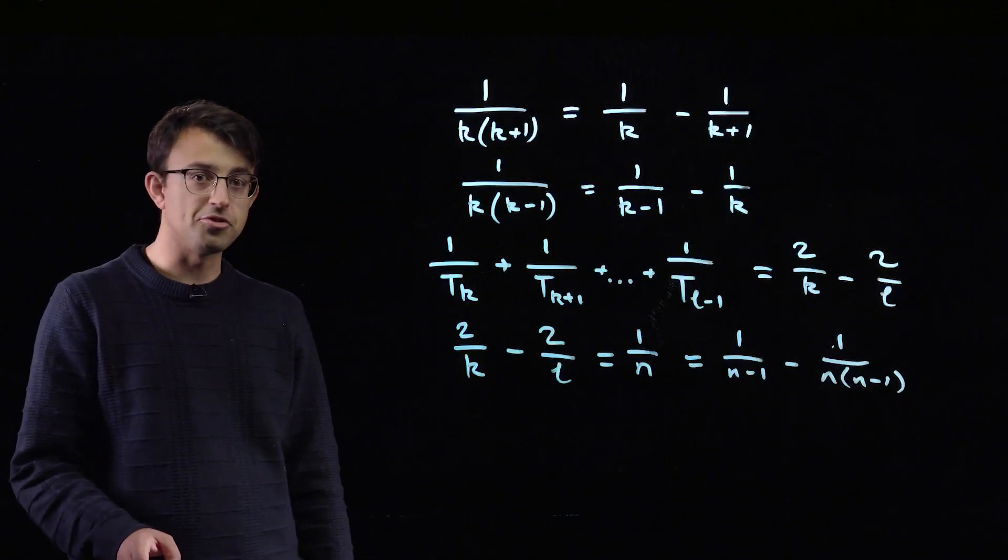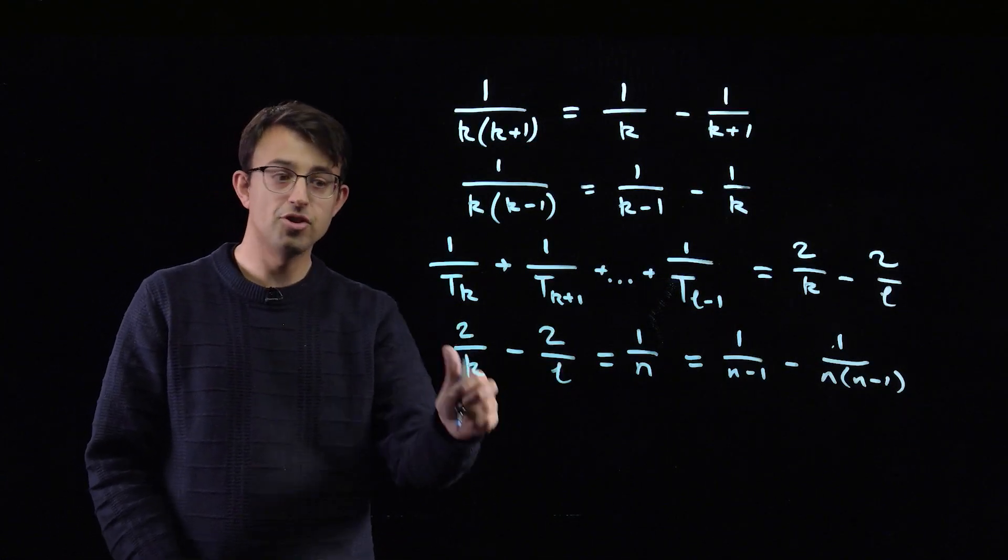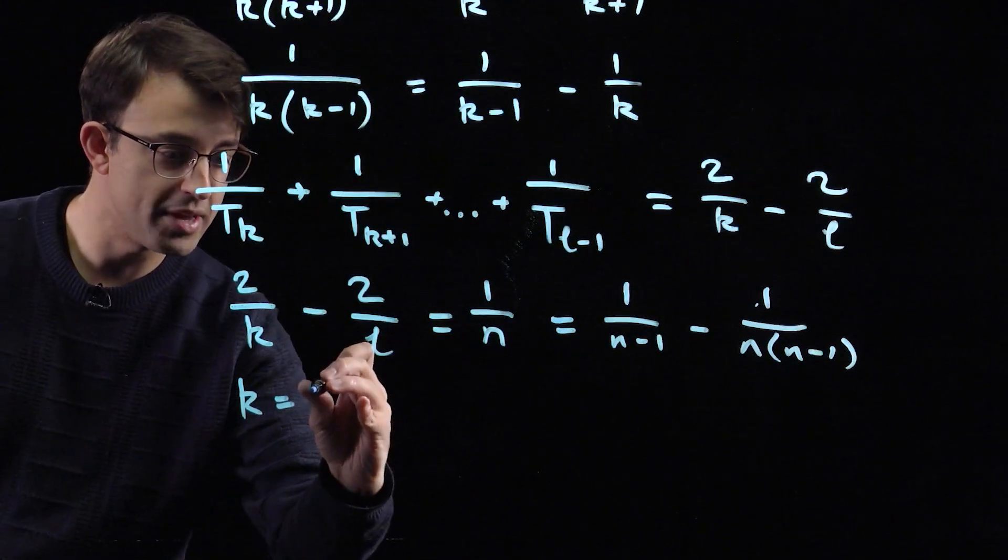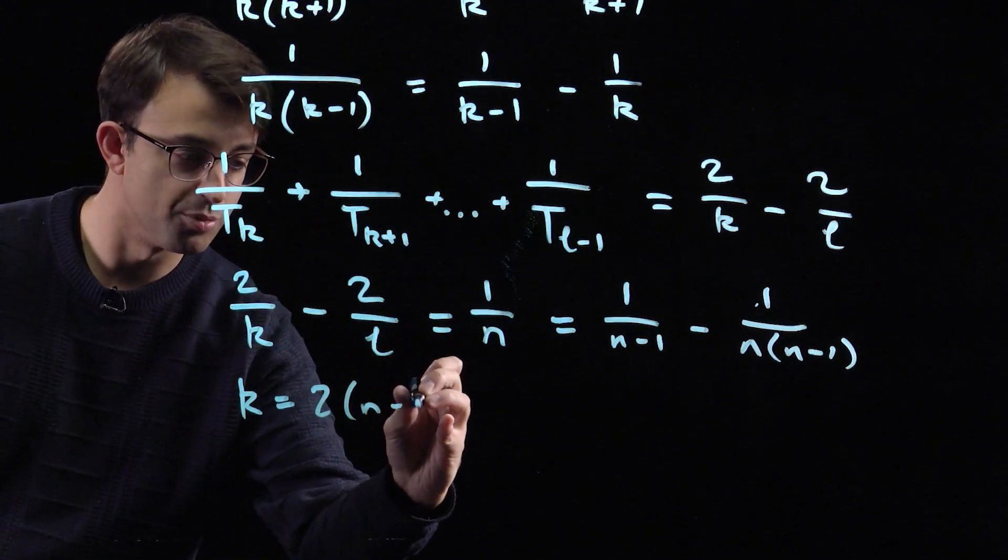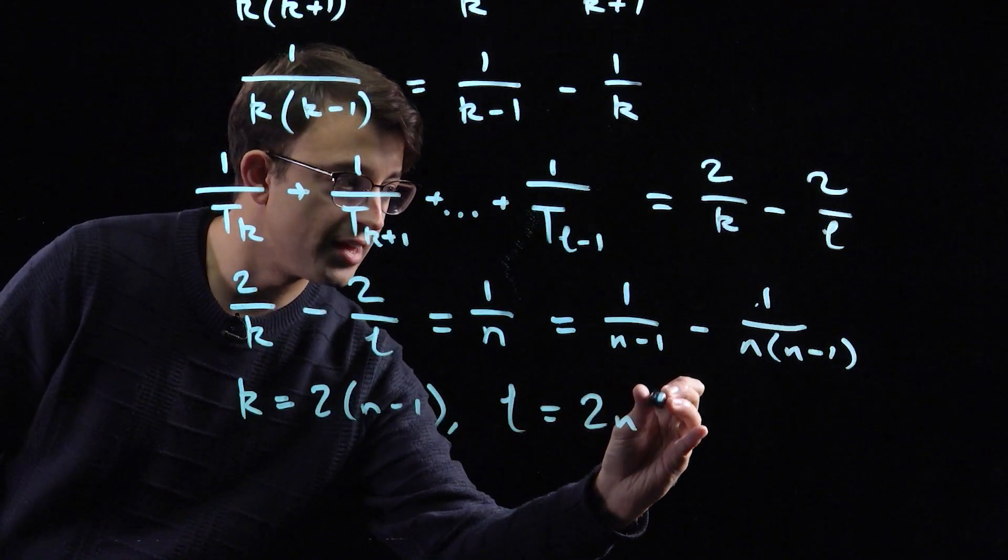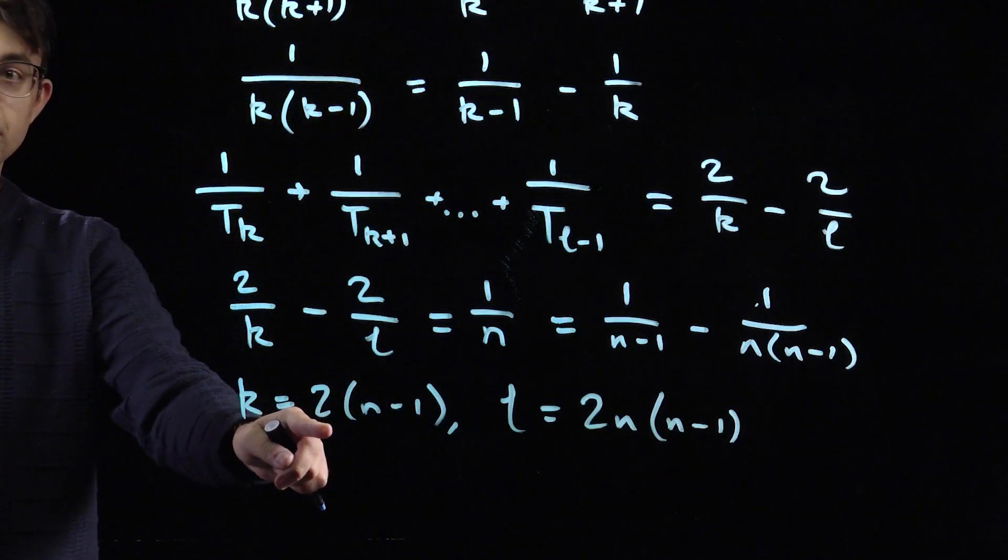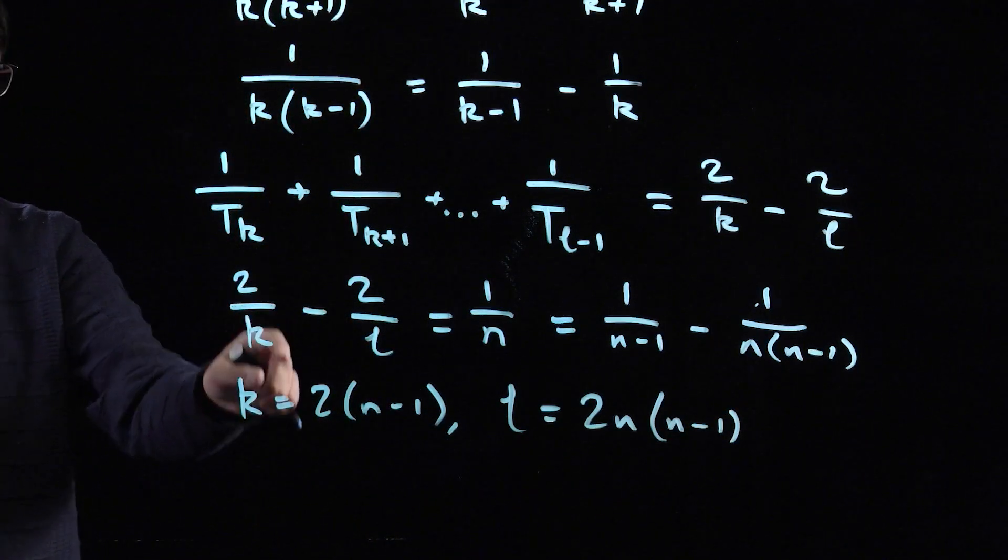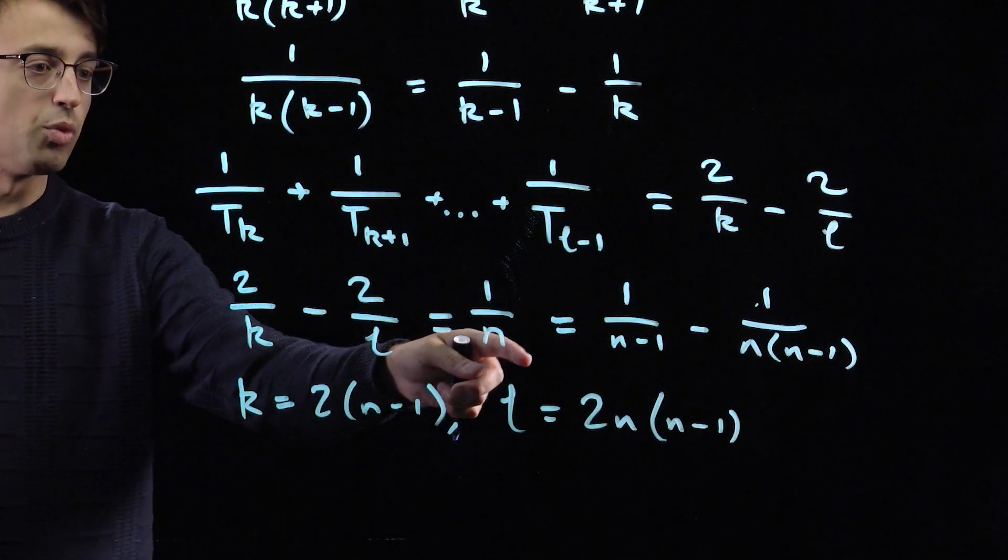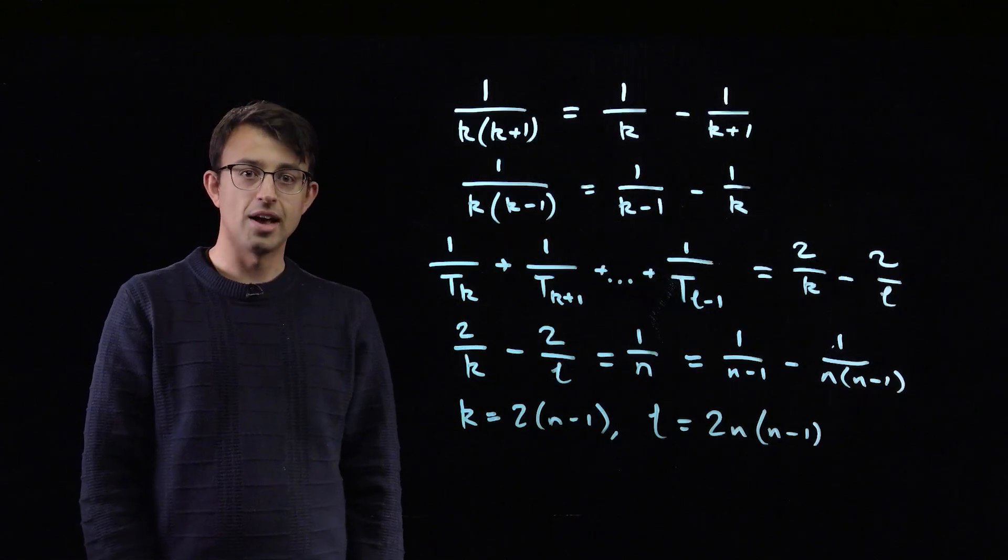All that remains is to deal with the factor of 2 in the numerator. But that's actually quite straightforward. We can just take k to be 2 times n minus 1 and l to be 2 times n times n minus 1. And these 2s in the definition are going to cancel with the 2s in the numerator and we're going to end up with exactly the expression we want.